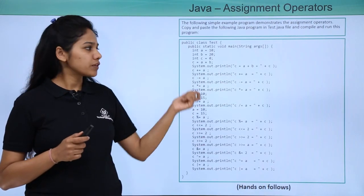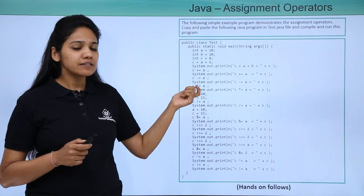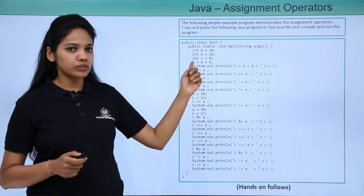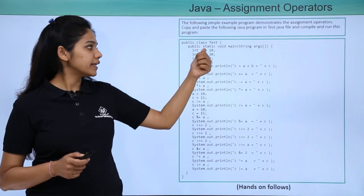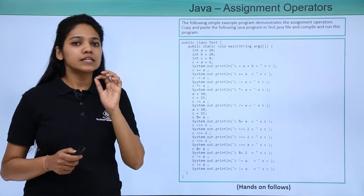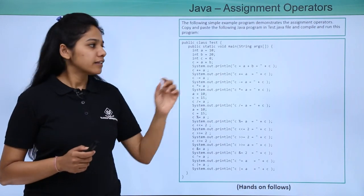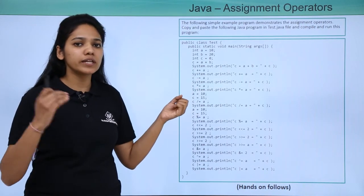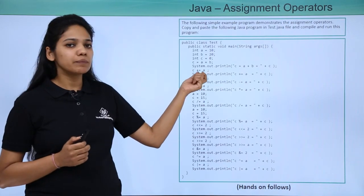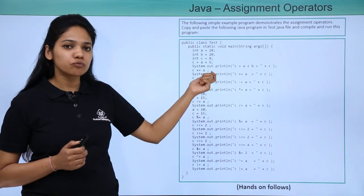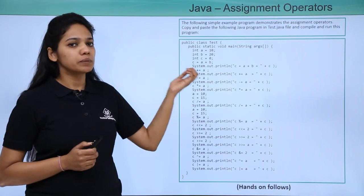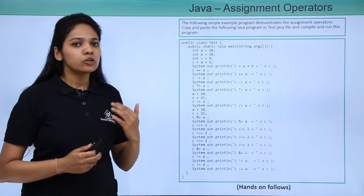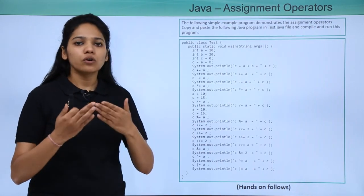Similarly, there are certain other operations. C plus equal to A stands as C is equal to C plus A. The C value which is nothing but A plus B — 10 plus 20 — so C is currently 30. In the second equation, the C value will be retrieved from memory as 30, then 30 will be added to A. That is 30 plus 10 is 40, and now the C value will be 40, and so on. So let us now create a program and run it practically to understand how assignment operators work.